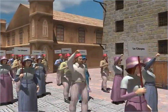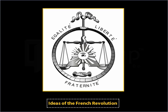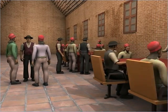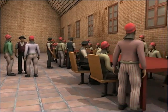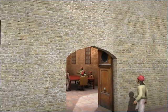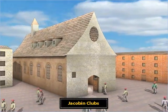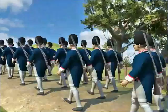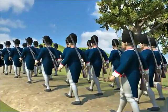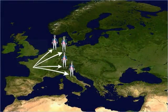Ideas like 'la patrie' and 'les citoyens' (the citizens) were introduced to create a sense of collective identity and equal rights among citizens. As these ideas of the French Revolution spread across Europe, many students and educated members of the middle class began setting up Jacobin clubs all over Europe.